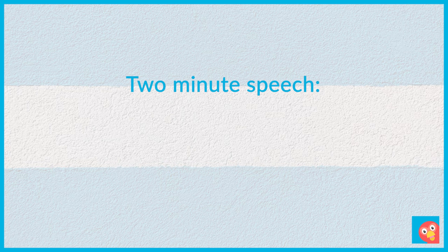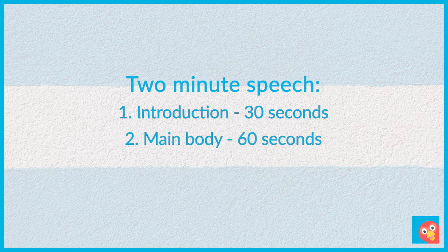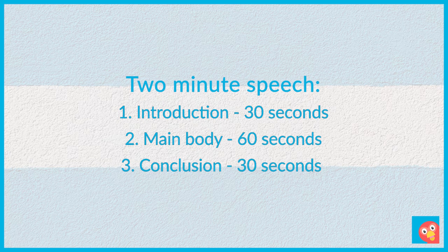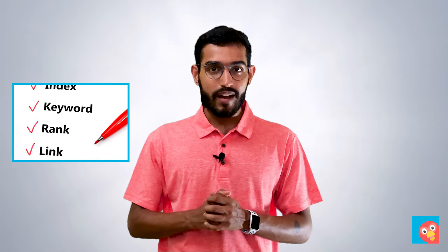To be precise, if you have two minutes, roughly divide your time into 30 seconds for the introduction, 60 seconds for the main body and finally remaining 30 seconds for the conclusion. You can also try and find keywords to structure your speech around. This will help you stay on track and not deviate from the topic.